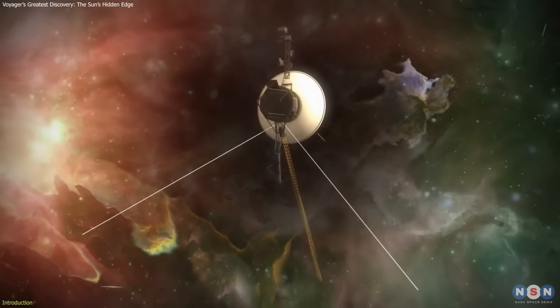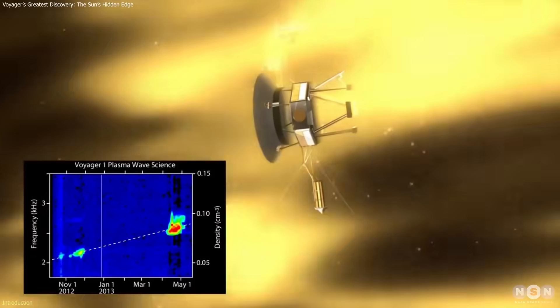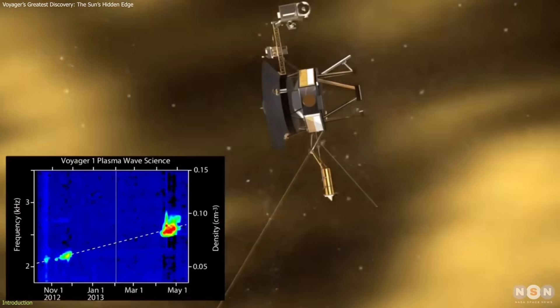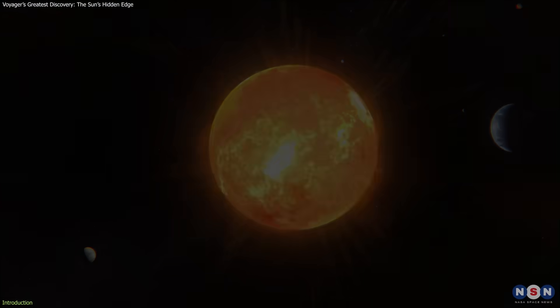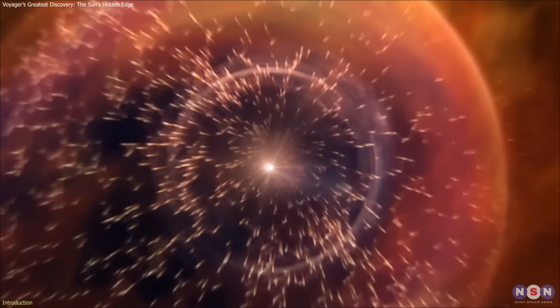As they entered interstellar space, Voyager 1 and Voyager 2 detected a sudden rise in temperature, up to 50,000 Kelvin, a searing plasma region marking the very edge of the Sun's influence.